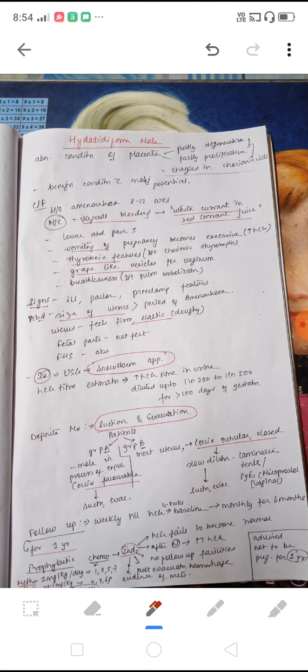Lower abdominal pain may or may not be present. Vomiting of pregnancy is excessive, that is also known as hyperemesis gravidarum, that is due to the increase in HCG. There are thyrotoxic features that is due to chorionic thyrotropin.